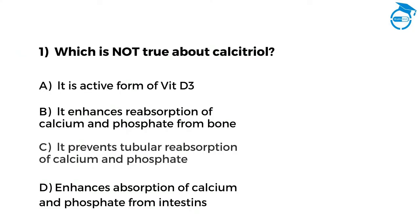The first question is: which is not true about calcitriol? Option A: calcitriol is the active form of Vitamin D3. Option B: calcitriol enhances absorption of calcium and phosphate from bone. Option C: calcitriol prevents tubular absorption of calcium and phosphate. Option D: calcitriol enhances absorption of calcium and phosphate from intestines.